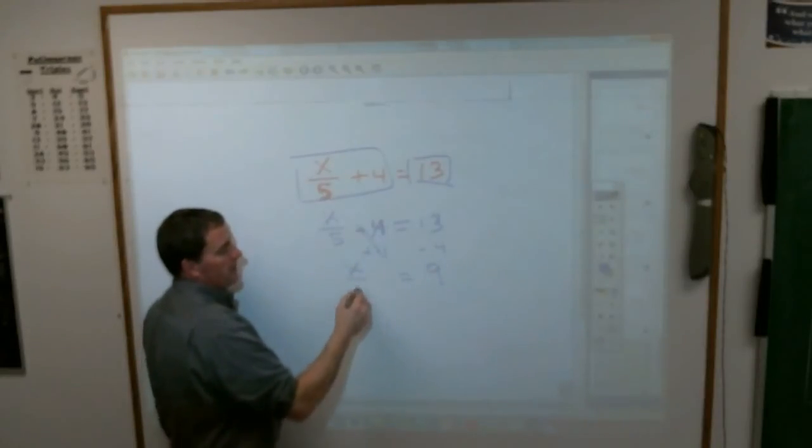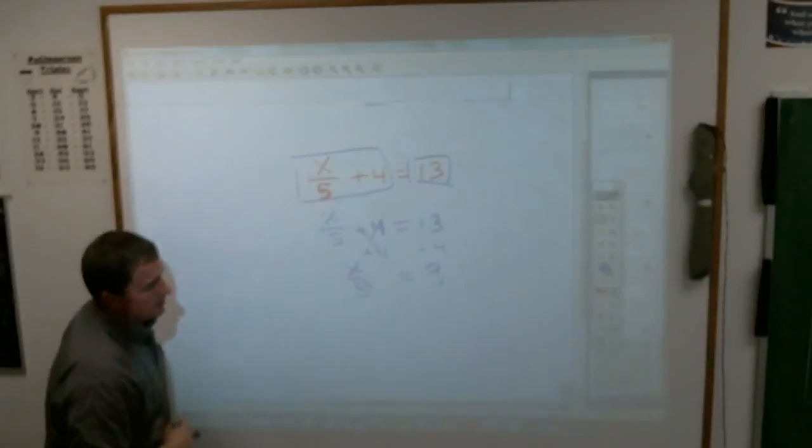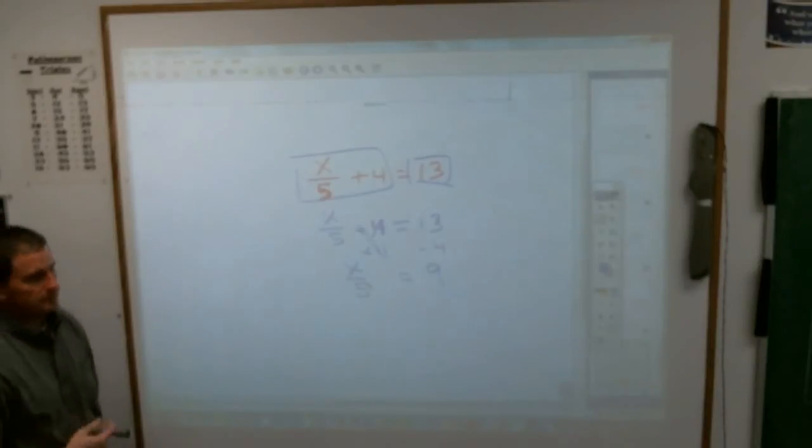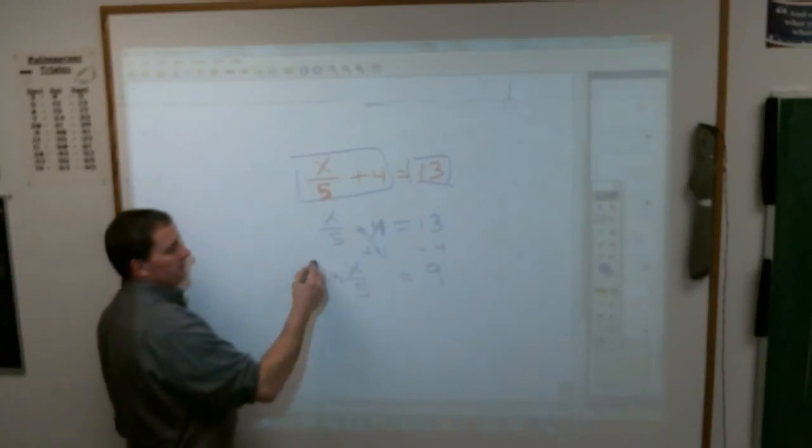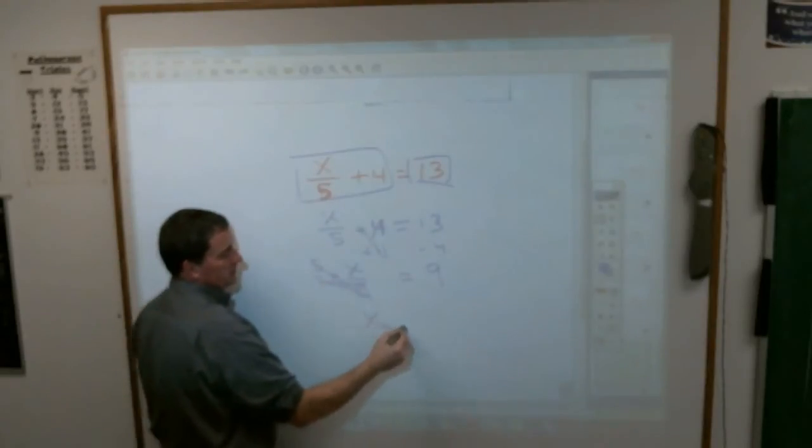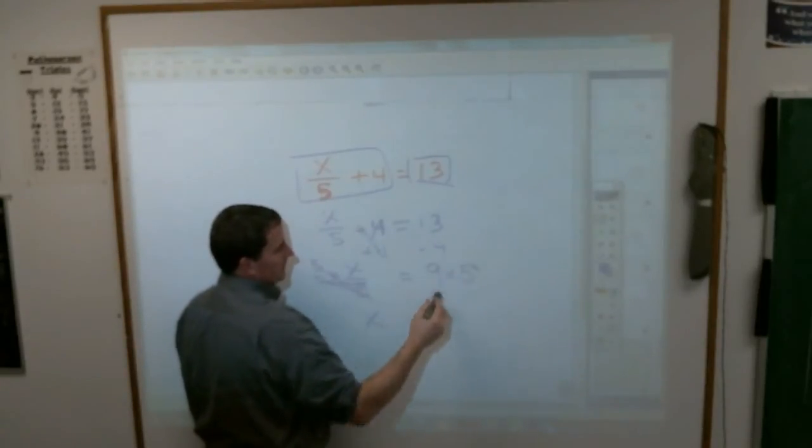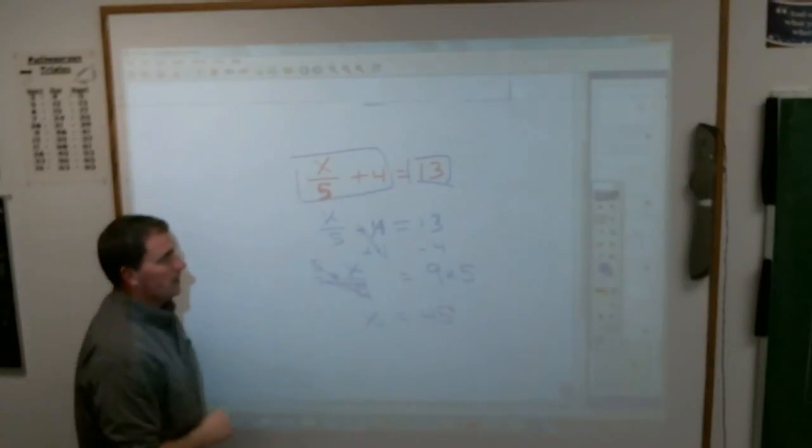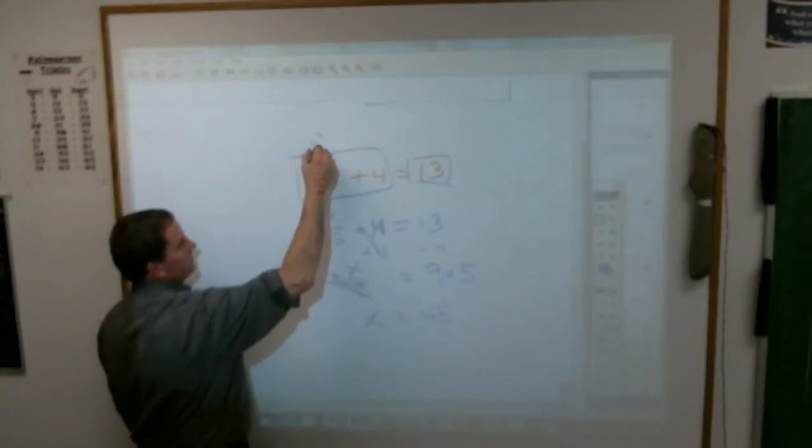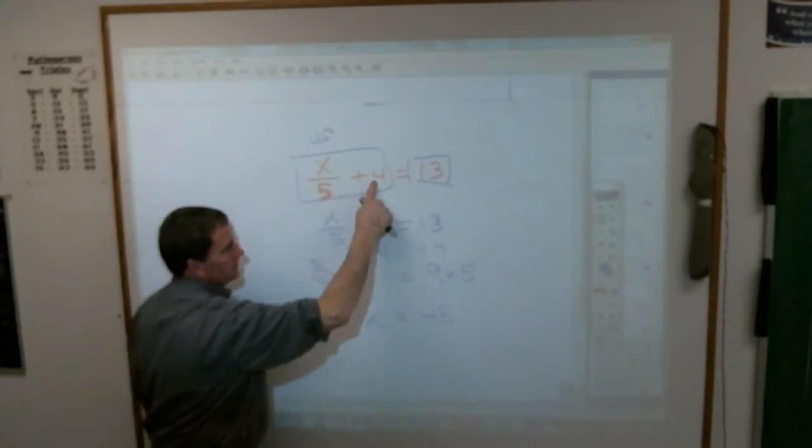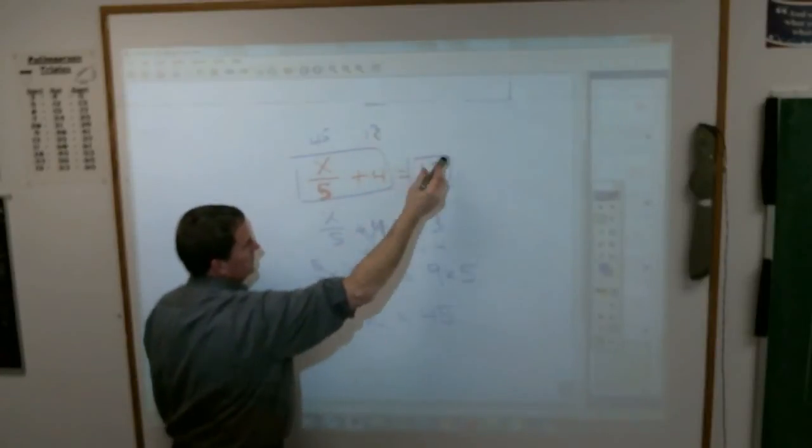x over 5 equals 9. Somebody, how do I get rid of a dividing by 5? Andrew Stupfer? Multiply both sides by 5. I multiply and divide by 5 by 5. This goes away and I'm left with x. Multiply this by 5 and I get 45. Does that work? If I put a 45 in here? 45 divided by 5 is 9 and 9 plus 4 is 13. 13 equals 13.